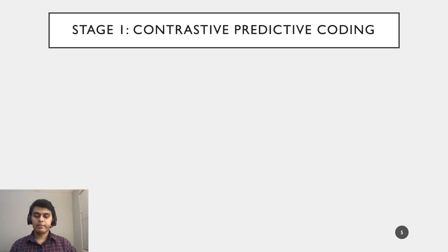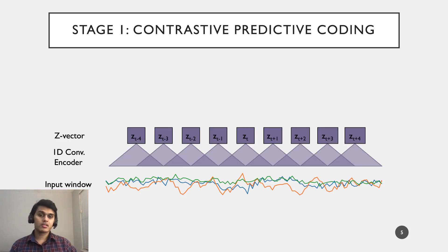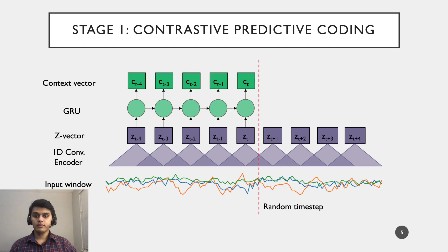CPC-based pre-training begins with a raw input window of sensor data. It is passed through a 1D convolutional encoder to process the raw window and map each time step into a series of higher-dimensional Z vectors. Then, we pick a random timestep T within the input window and pass all Z vectors through an autoregressive network, which in our case is a GRU. The GRU summarizes all the Z vectors into a single context vector C_T.